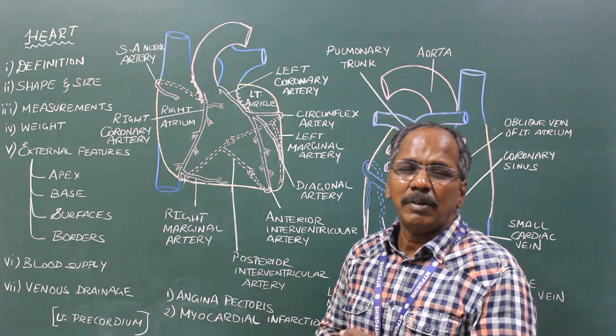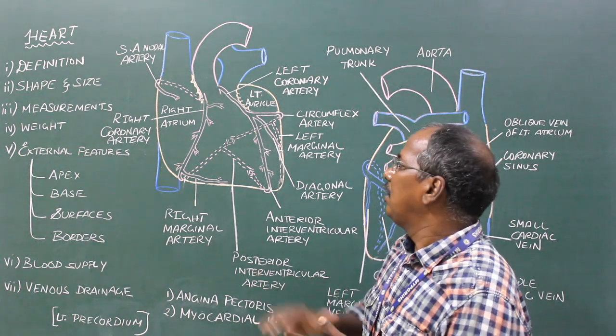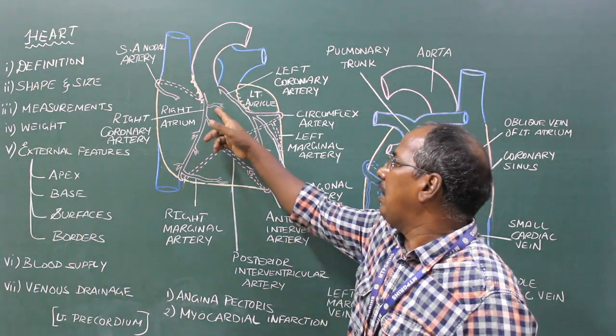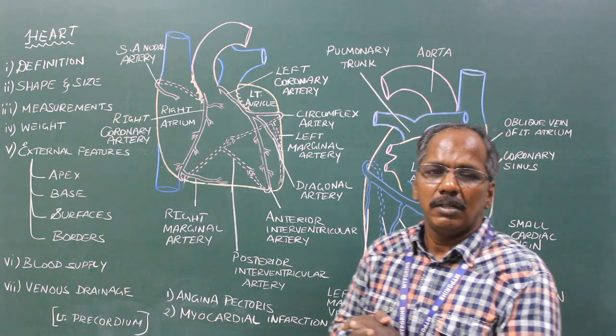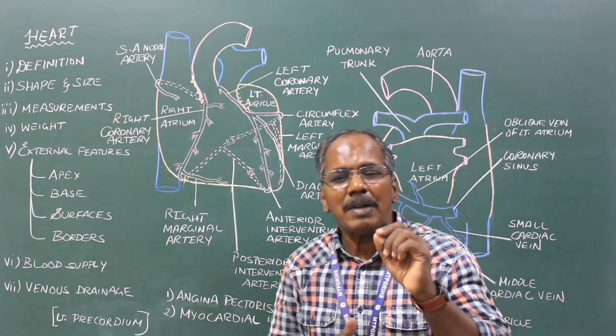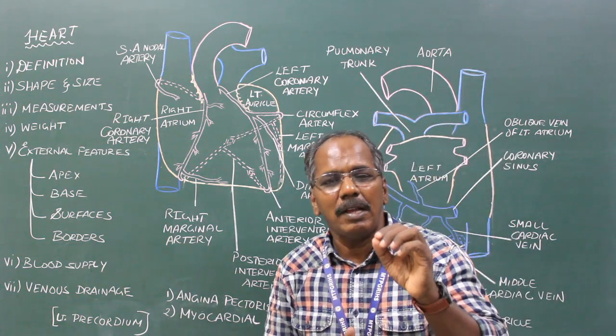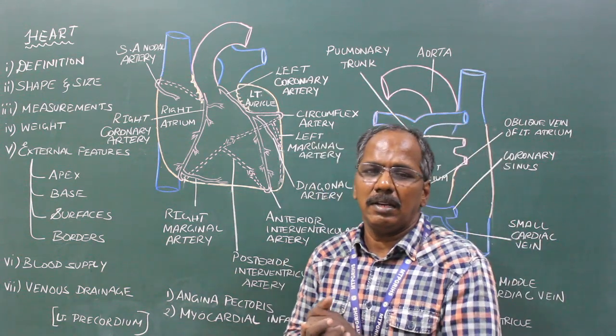Number 4, right conus artery. These are the branches of the right coronary artery.